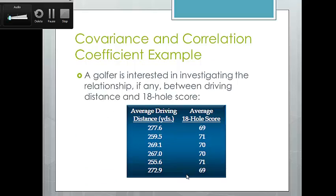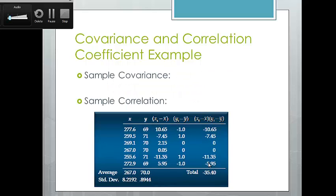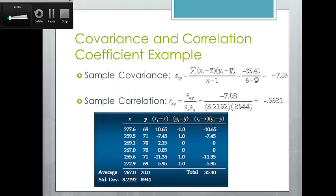For example, a golfer is interested in the relationship between driving distance and 18-hole score. We have average driving distance in yards and average 18-hole score. The sample covariance is approximately negative 0.708, telling us the variables move in opposite directions. The correlation coefficient of negative 0.9631 tells us there is a strong connection — a strong inverse relationship where as distance increases, score decreases.